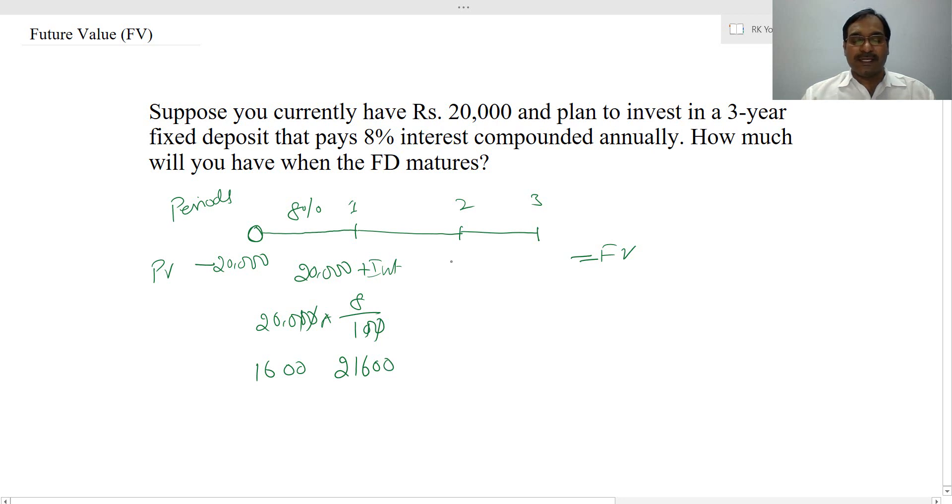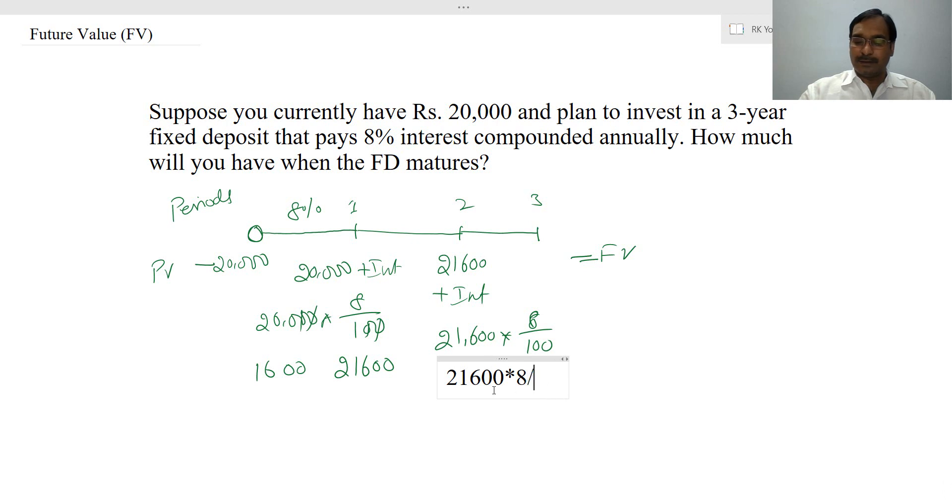Now the second year, you will have 21,600 plus interest amount on this. That means 21,600 into 8 by 100. This is 21,600 into 8 divided by 100.